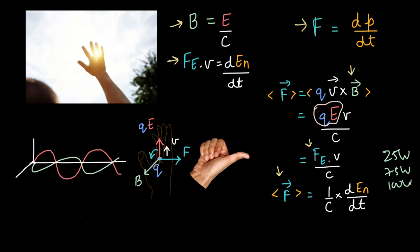And that is equal to one by C into the amount of energy that is transferred or absorbed by our hand. We can cancel off these dts.